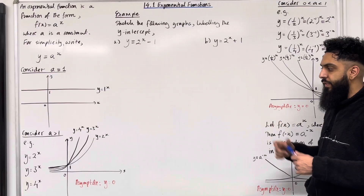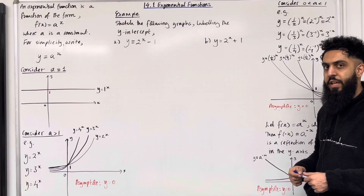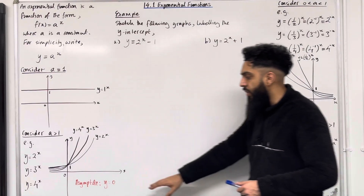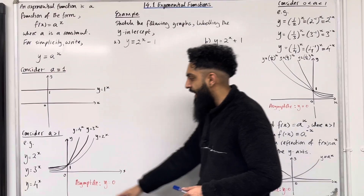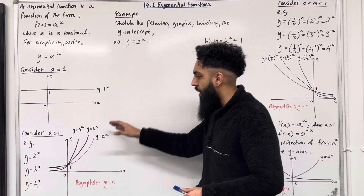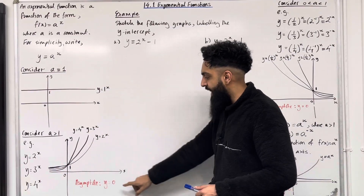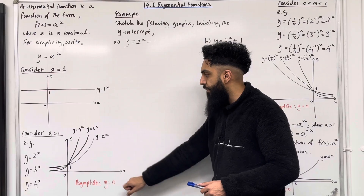Each of these graphs has an asymptote with equation y = 0 — the asymptote is the x-axis. The graphs do not cut the x-axis, which has equation y = 0.